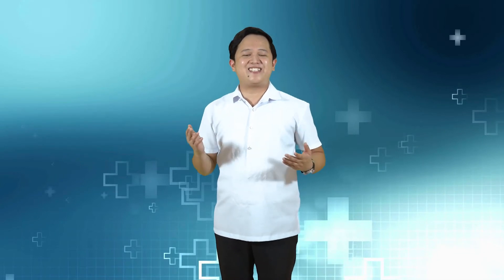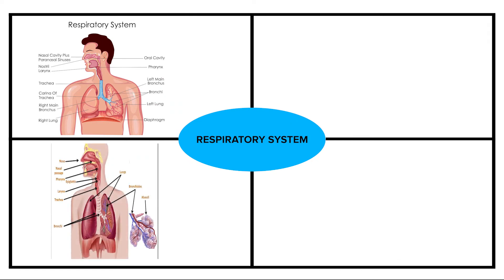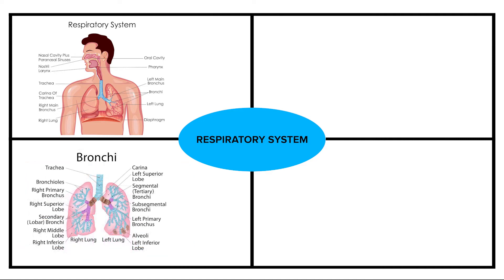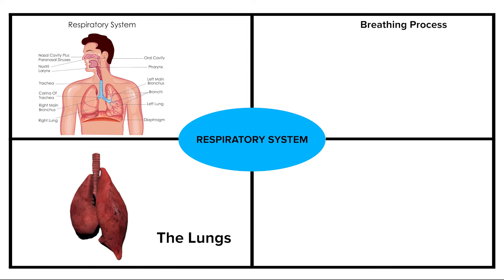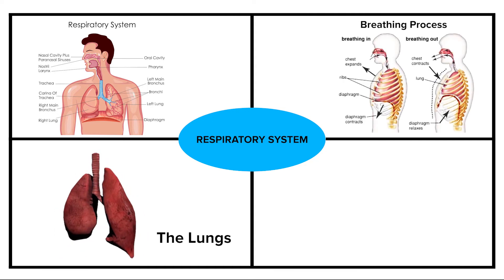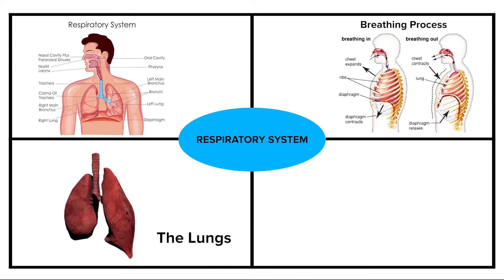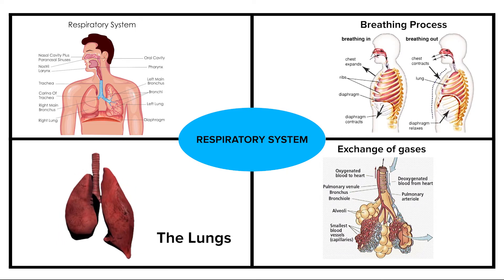In summary: the respiratory system functions in the exchange of gases between body cells and the environment. It consists of the nose, pharynx, larynx, trachea, bronchi, and the lungs containing the bronchial tree and air sacs. The breathing process involves the alternate contraction and relaxation of the diaphragm, abdominal muscles, and intercostal muscles. Actual exchange of gases takes place between the alveoli and the blood.